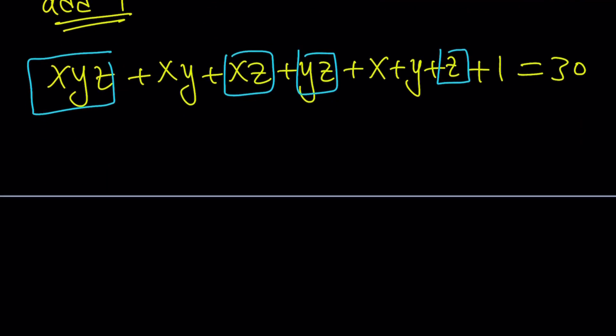That's not good. Okay, so here's what we're going to do. Every term that I boxed has a z in it, so I'm going to take out a z. x, y plus x plus y plus 1 because I have one z.